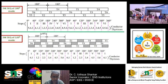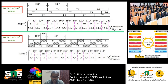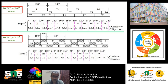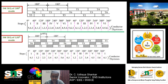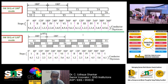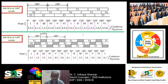In 180-degree mode of conduction, each switch pair in a leg is turned on at a 180-degree interval. S1 and S4 are switched on at a 180-degree interval, whereas upper transistors are switched on at 120-degree intervals. Between T1 and T3 it is 120 degrees; similarly between T3 and T5 it is 120 degrees. So between upper transistors it is 120 degrees, whereas between transistors of the same leg the switching on and off is at 180 degrees.